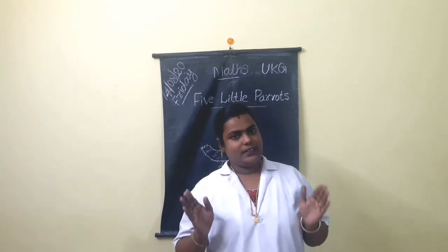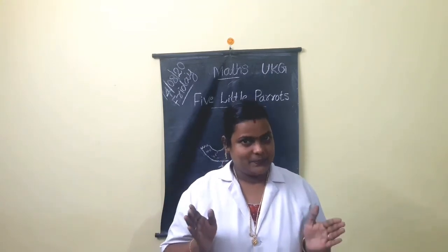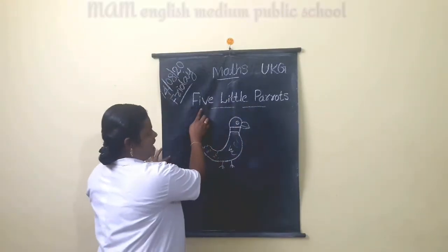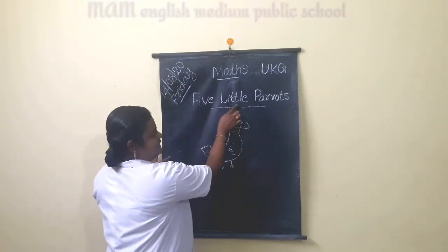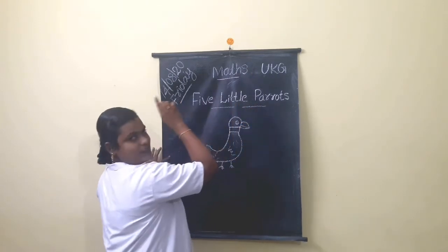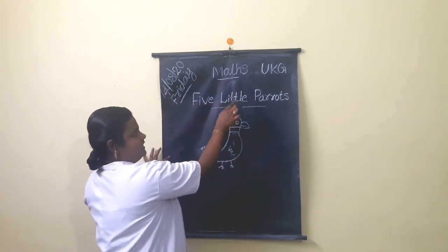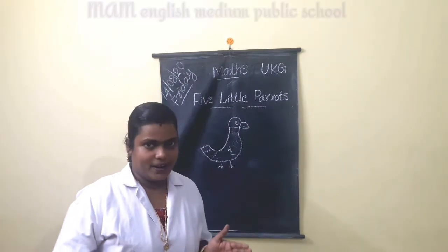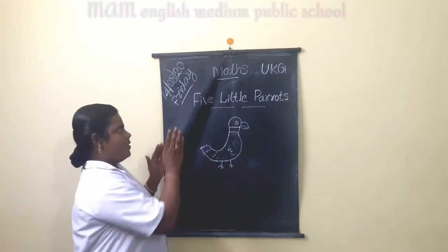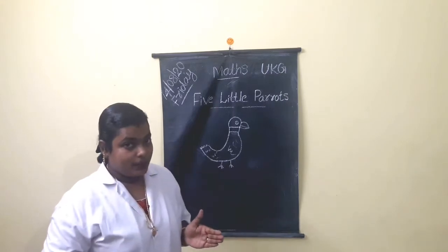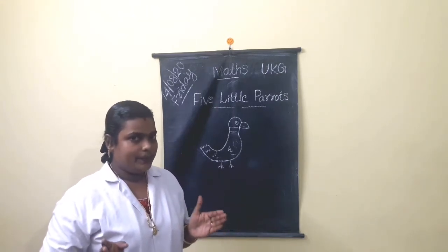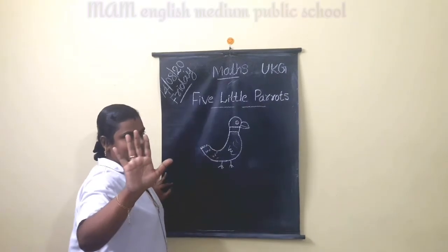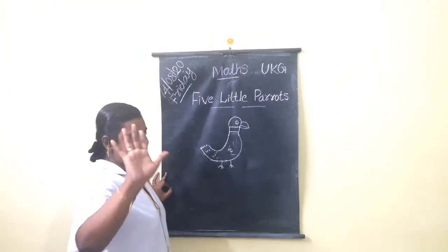Today, we are going to learn the rhyme. The rhyme name is Five Little Parrots. Five Little Parrots. Five means five.